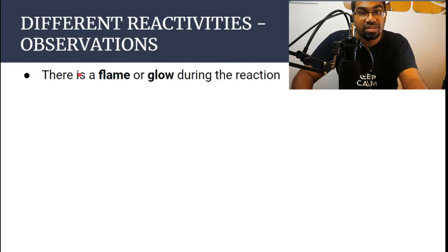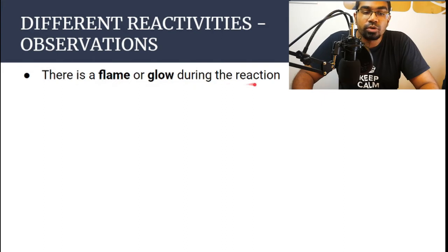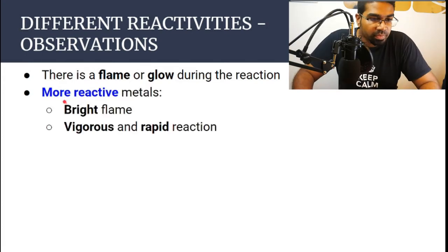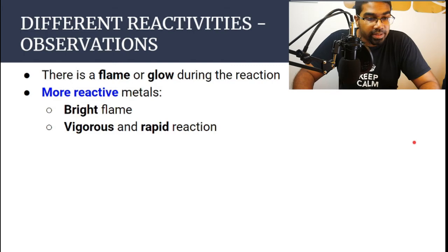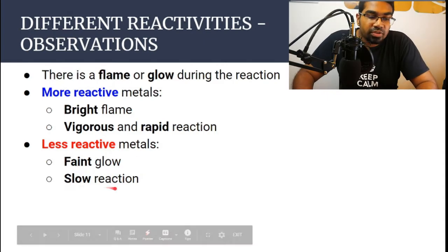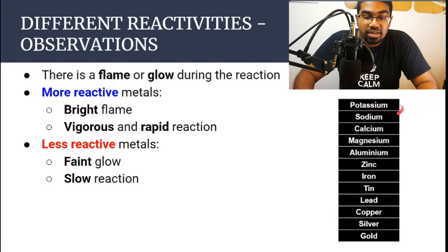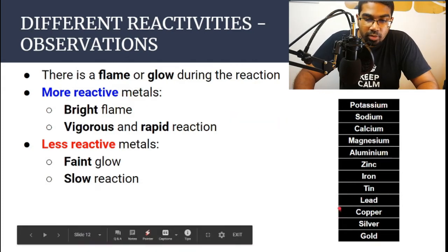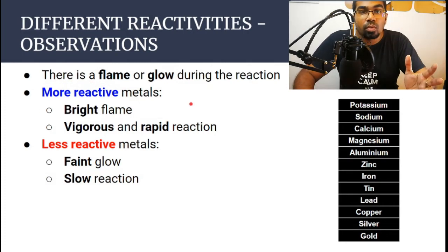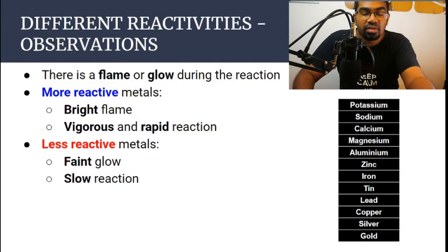Normally when the reaction occurs between metal and oxygen, there will be a flame or glow. By observing the intensity of the flame and glow and the vigor of the whole reaction, we can tell whether a metal is very reactive or not. The more reactive metals will produce a bright flame and the reaction will be very vigorous and rapid. Whereas for the less reactive metals, there might not be a flame — there might just be a faint glow and the reaction is very slow. Very reactive metals such as potassium, sodium and calcium will react very quickly with a bright flame, whereas unreactive metals such as tin, lead and copper will have a very slow reaction with only a faint glow.